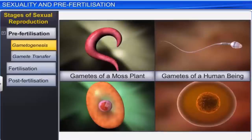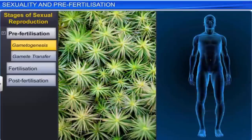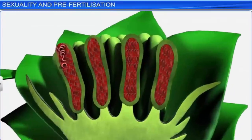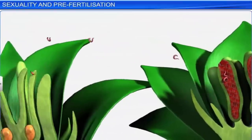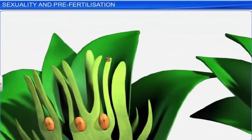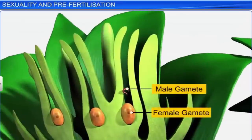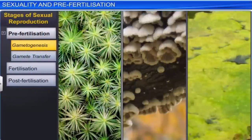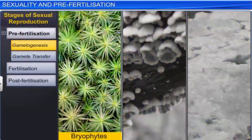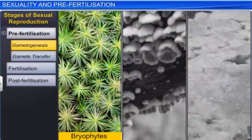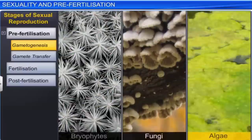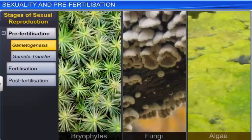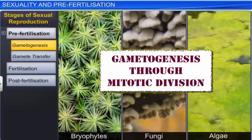The type of cell division is decided by the nature of the parent body. Haploid organisms, such as moss, a type of bryophyte, produce gametes by undergoing mitotic division. Apart from bryophytes, other haploid organisms belonging to fungi and algae too produce gametes by mitotic division.